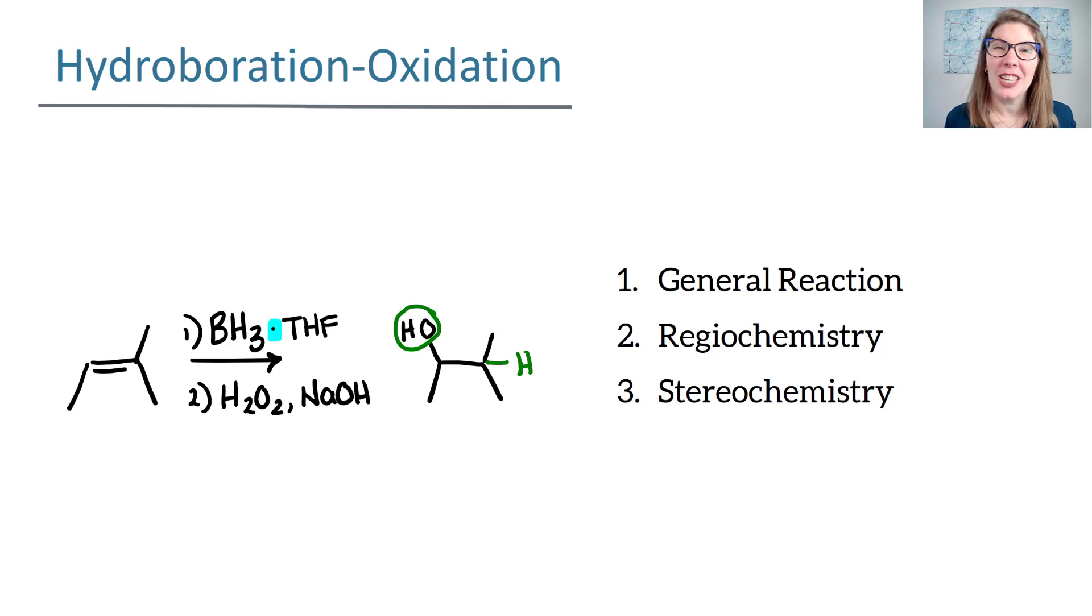What we're going to find in this reaction is you make an alcohol again, we're adding H and OH across the pi bond. The difference is going to be that the OH goes to the less substituted side. So let's look at more of that regiochemistry and then we'll consider the stereochemistry.